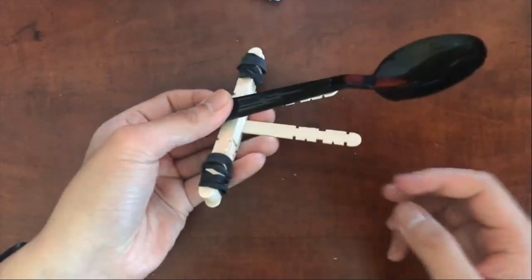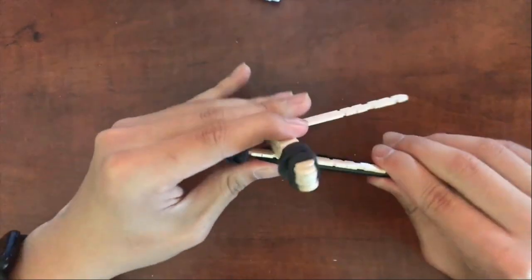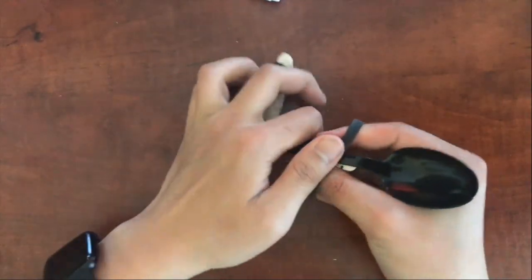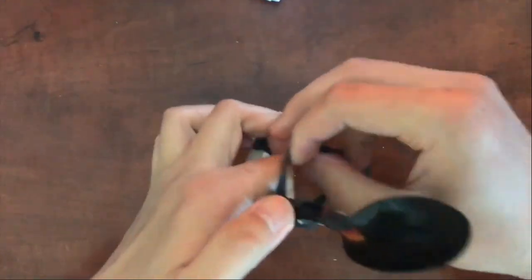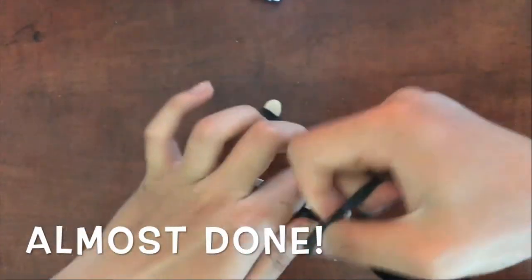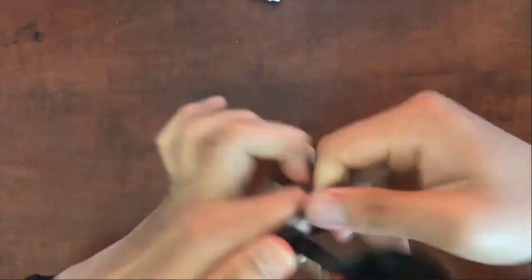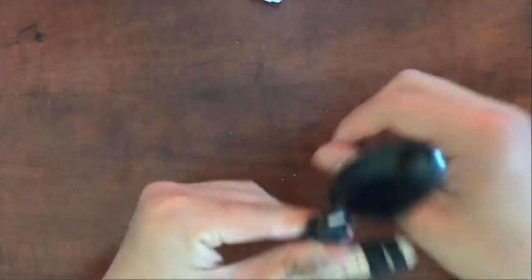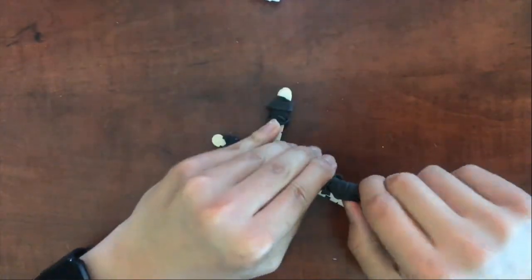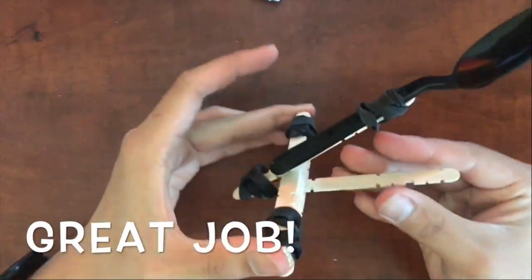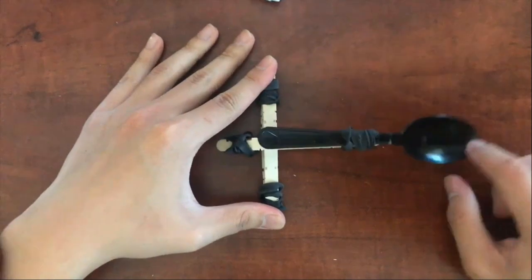Lastly, we're going to take our spoon and then we're going to put it right on top of this popsicle stick we just added. Let's take another rubber band and start twisting until it's tight, just like this. Around, around, around. Then you might want to just adjust it until everything is nice and straight. And we should have something that looks like this.